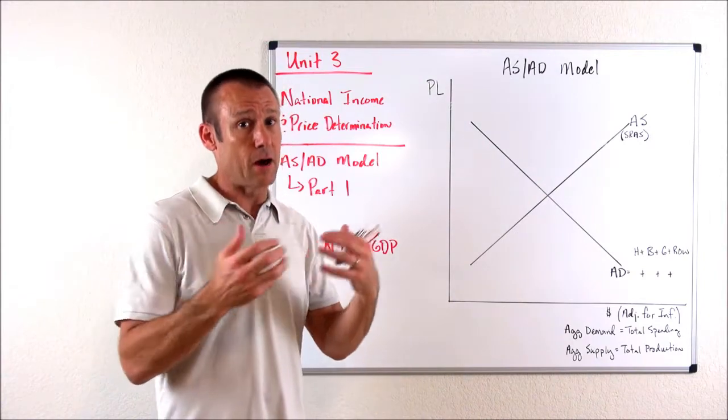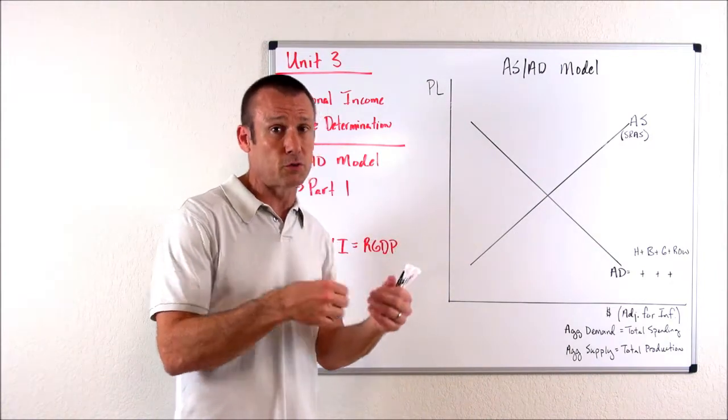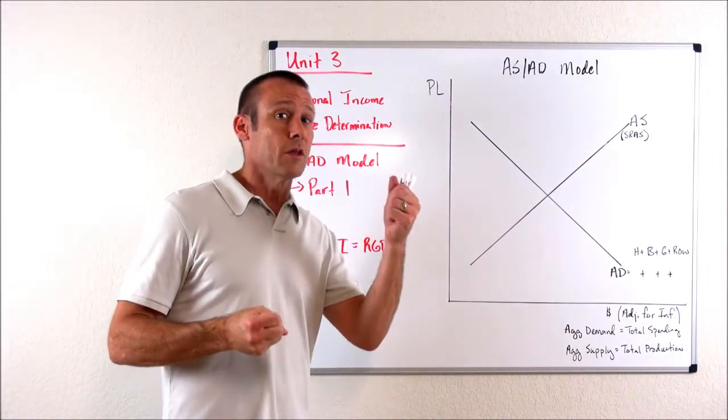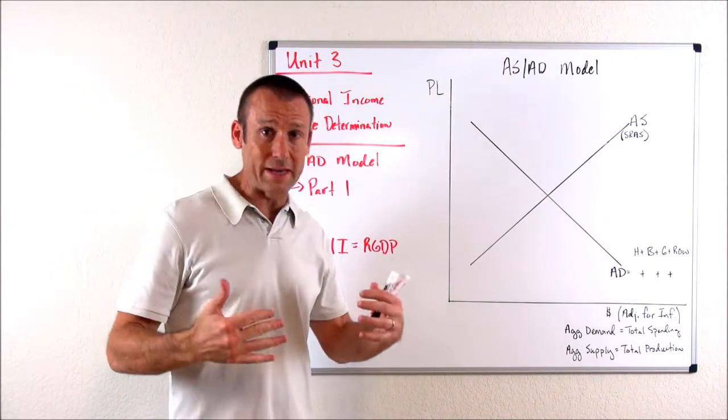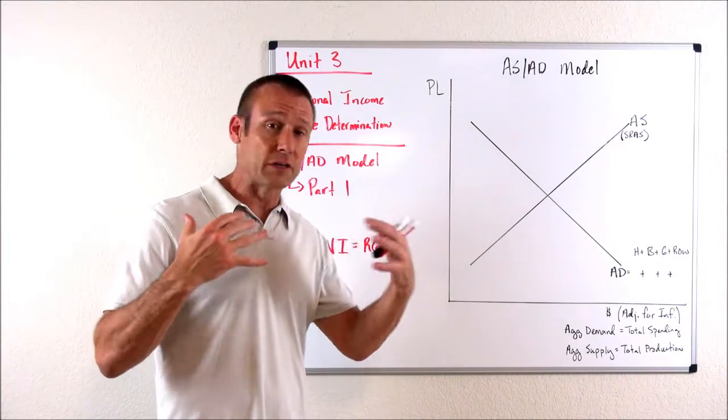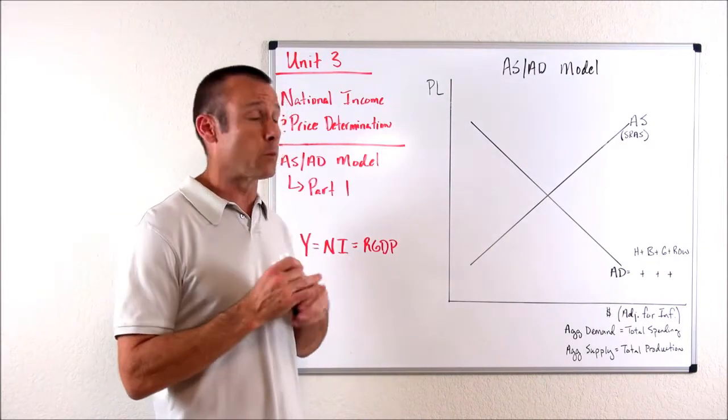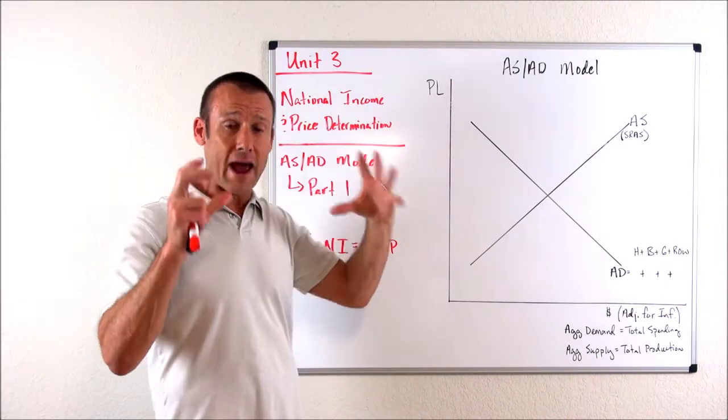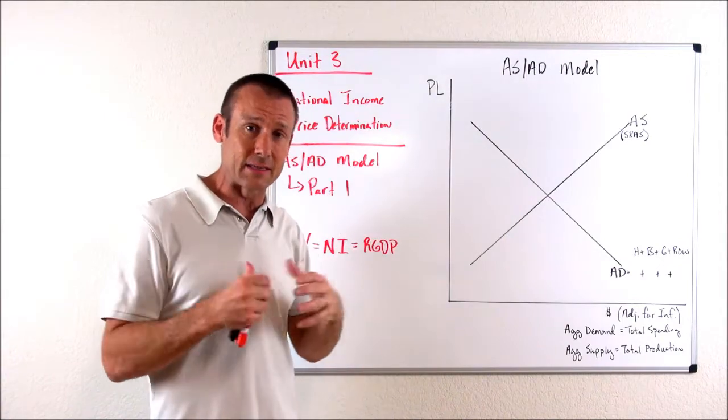We say, okay, how many cans of Coca-Cola were created, were produced? How many Ford Explorers were produced? Of course, there were more cans of Coke than Ford Explorers. And so we weight each of those products according to how much of each of those products we make when we come up with this single measurement, this aggregate measurement of prices in the economy.